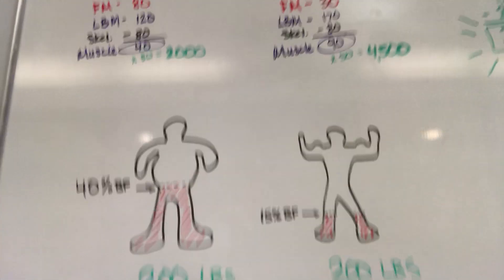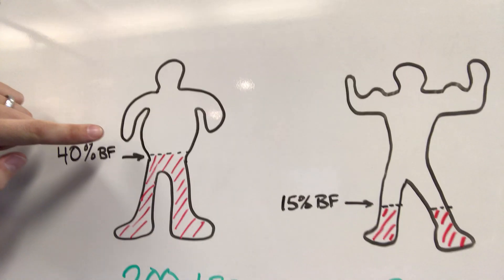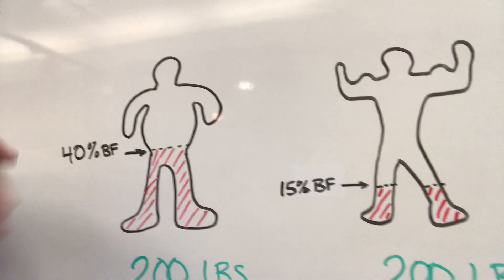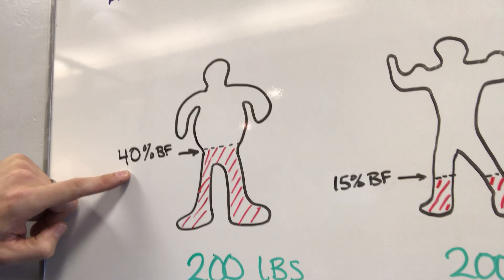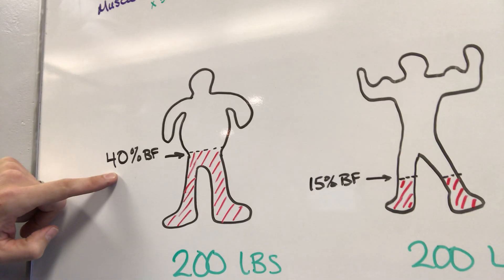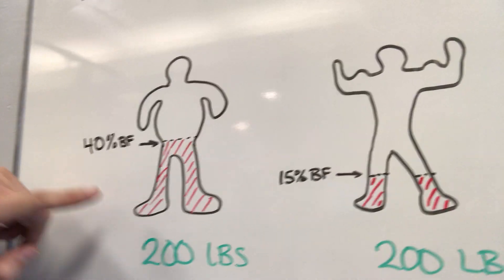I wanna show you a little drawing that I made here. Let's say you've got person A, who maybe has a little more around the midsection, maybe a little softer. This person's going to be, let's say for the sake of this video, 40% body fat, they weigh 200 pounds. Alright, 40% body fat, 200 pounds.